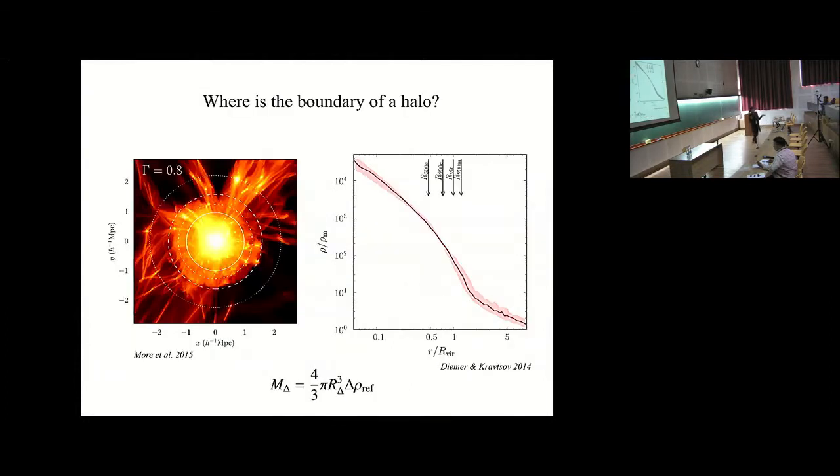I'll start at the beginning. In general, we know that dark matter halos are basically bound virialized objects which are the endpoints of all structure formation in the universe. However, the boundary or the region of influence of a halo is somewhat murkily defined.